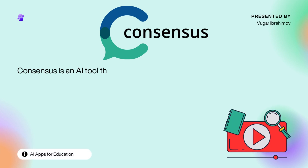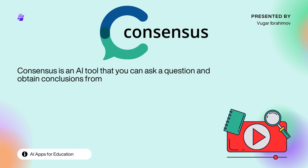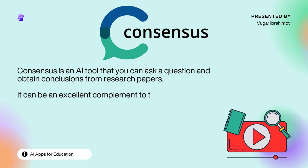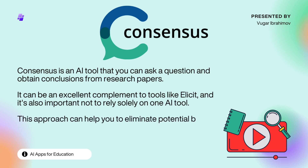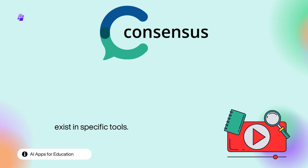Consensus is an AI tool that you can ask a question and obtain conclusions from research papers. It can be an excellent complement to tools like Elicit, and it's important not to rely solely on one AI tool. This approach can help you eliminate potential biases that might exist in specific tools.